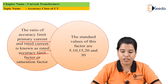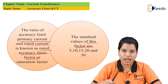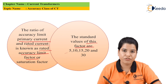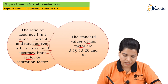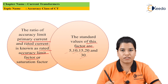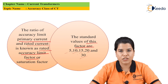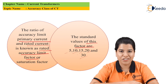The standard values for this factor are 5, 10, 15, 20, and 30. In this way, we have studied the accuracy class of current transformer — that is CT. Thank you friends for watching this video.